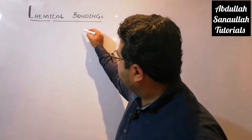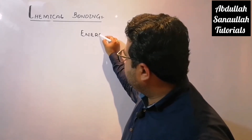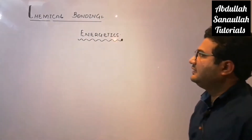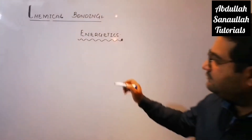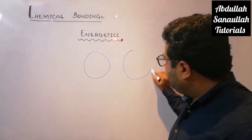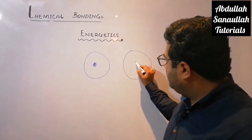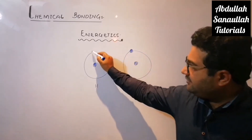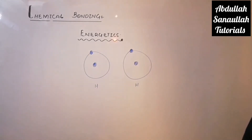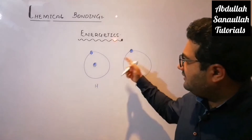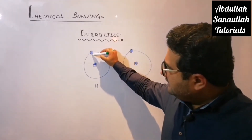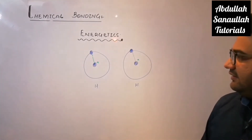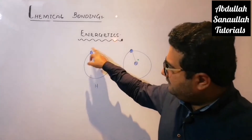Let us discuss the modern concept of bond formation, or the energetics of bond formation. I am taking the example of two simplest atoms with respect to their electronic configuration — hydrogen atoms, having one electron each. When they are present in isolated form, meaning they are not bonded, each electron is attracted by its own nucleus, and there is a force of attraction between nucleus and electron within the same atom.